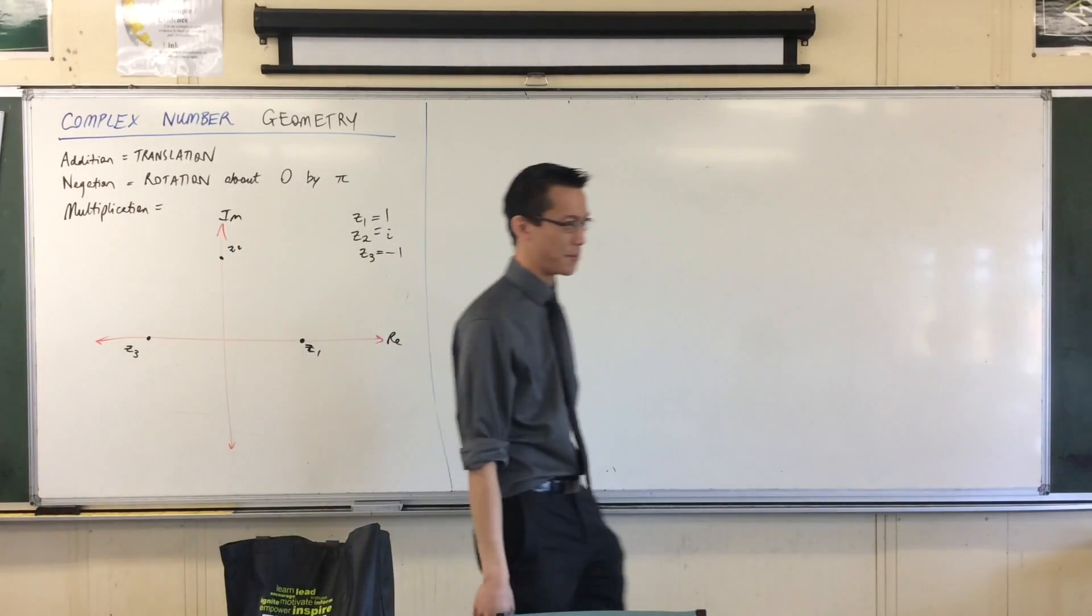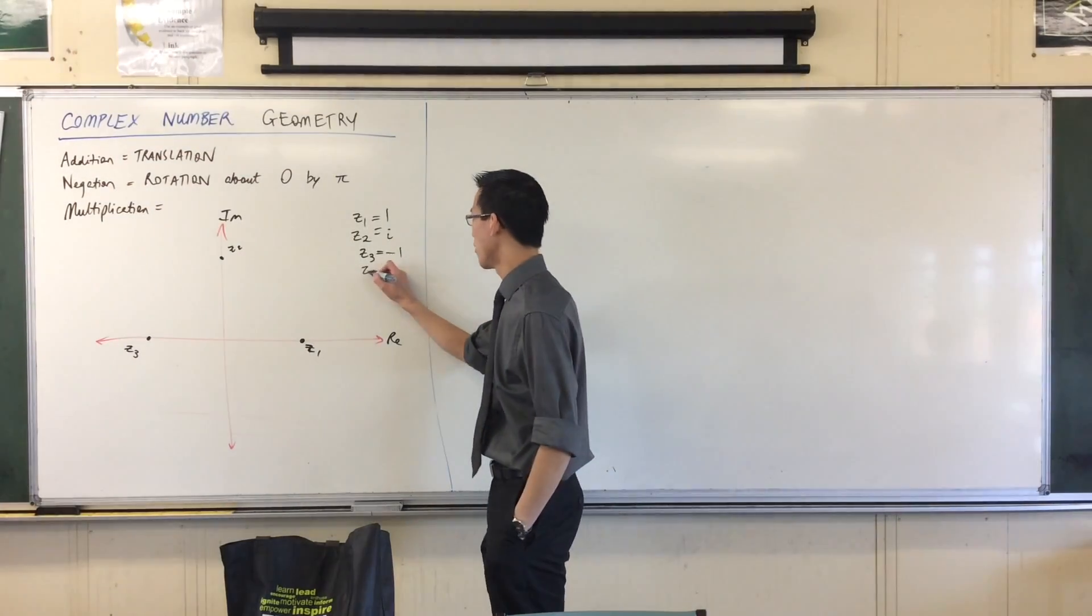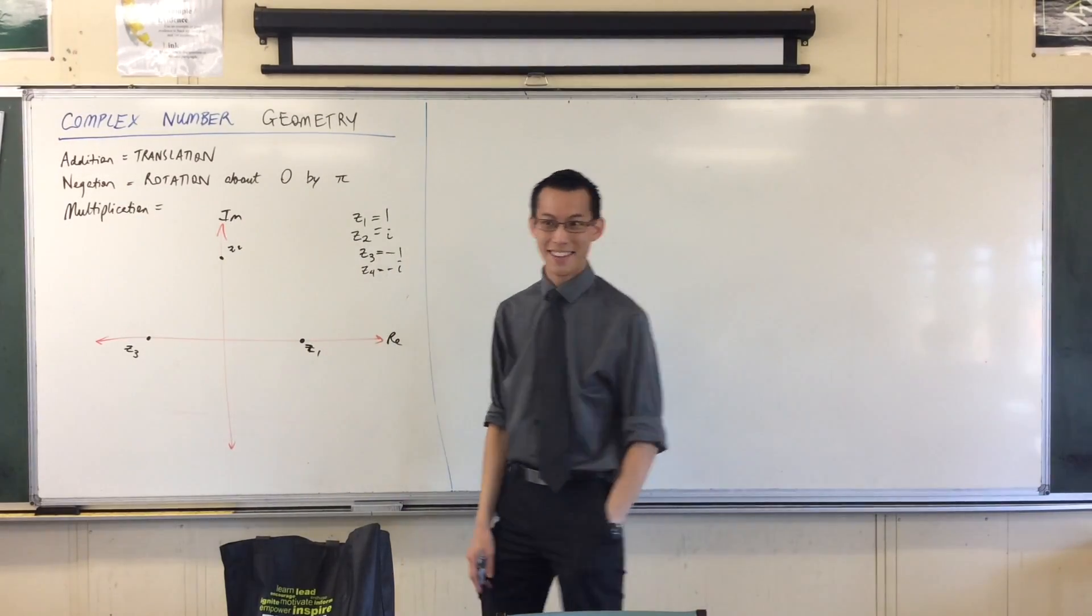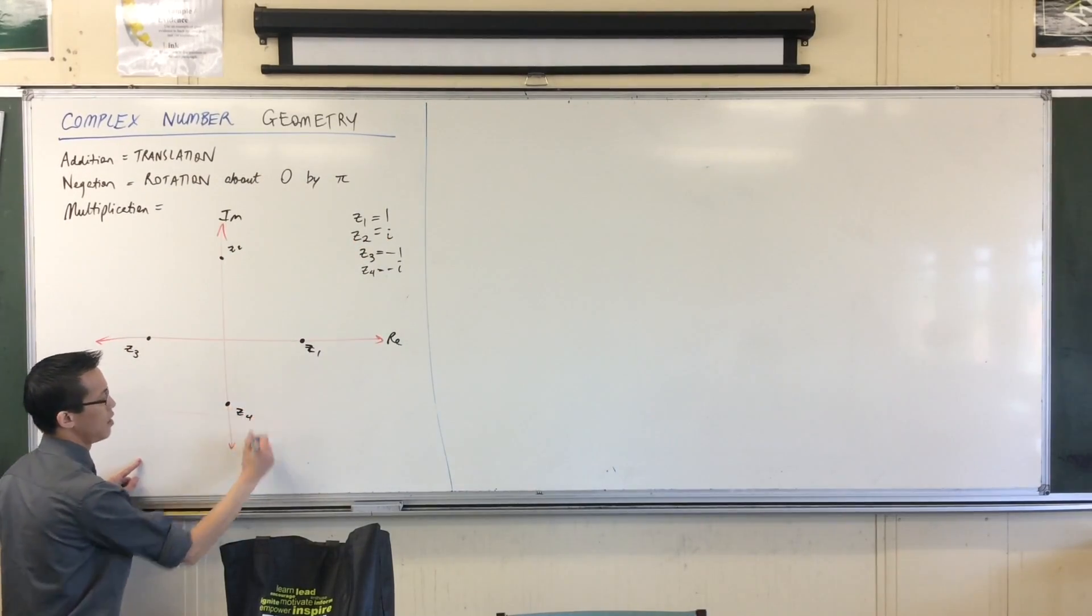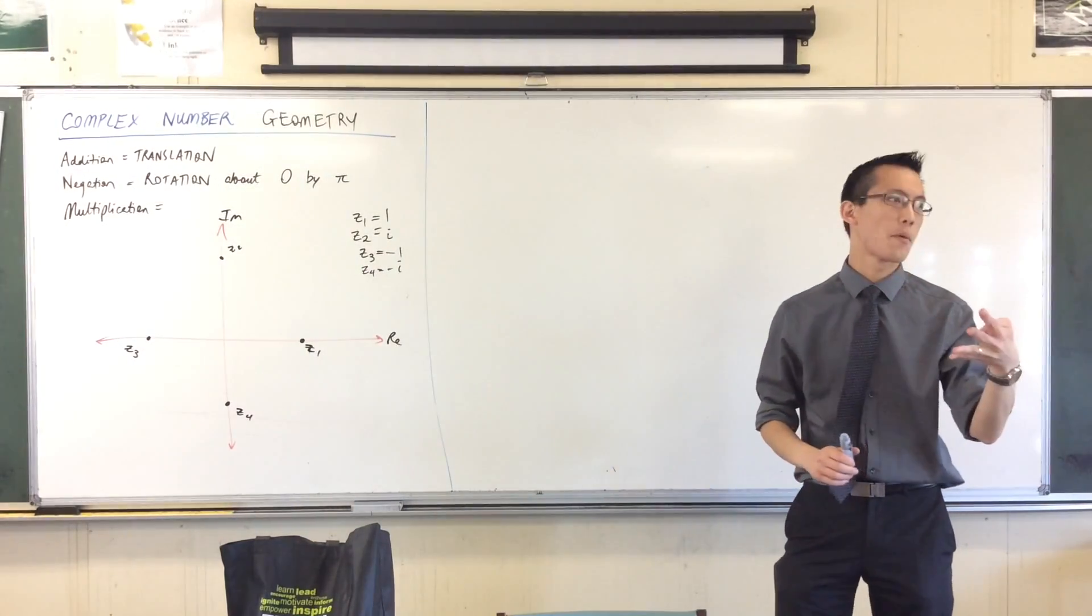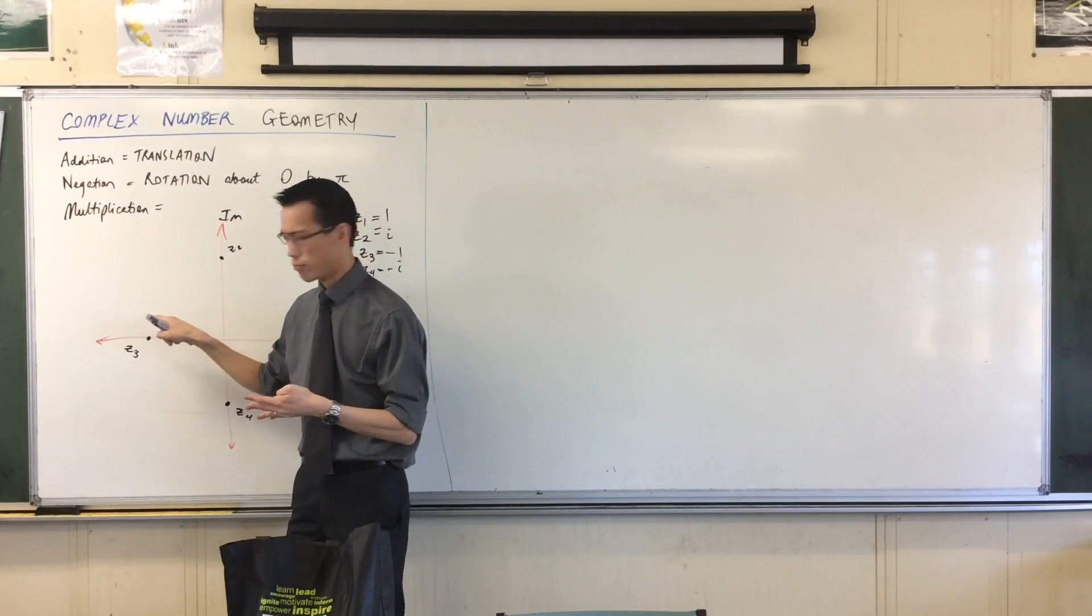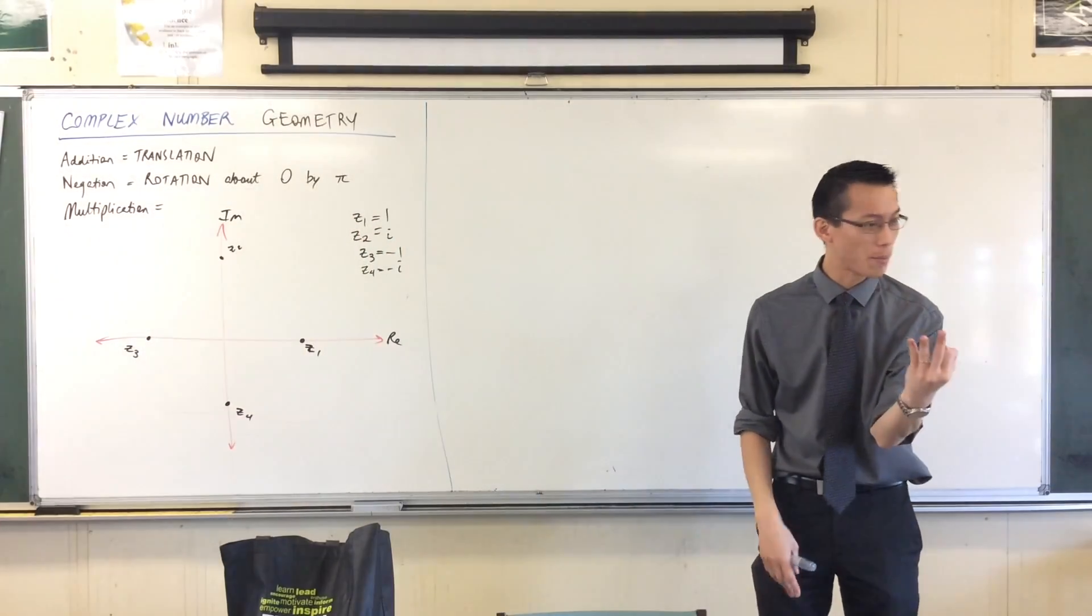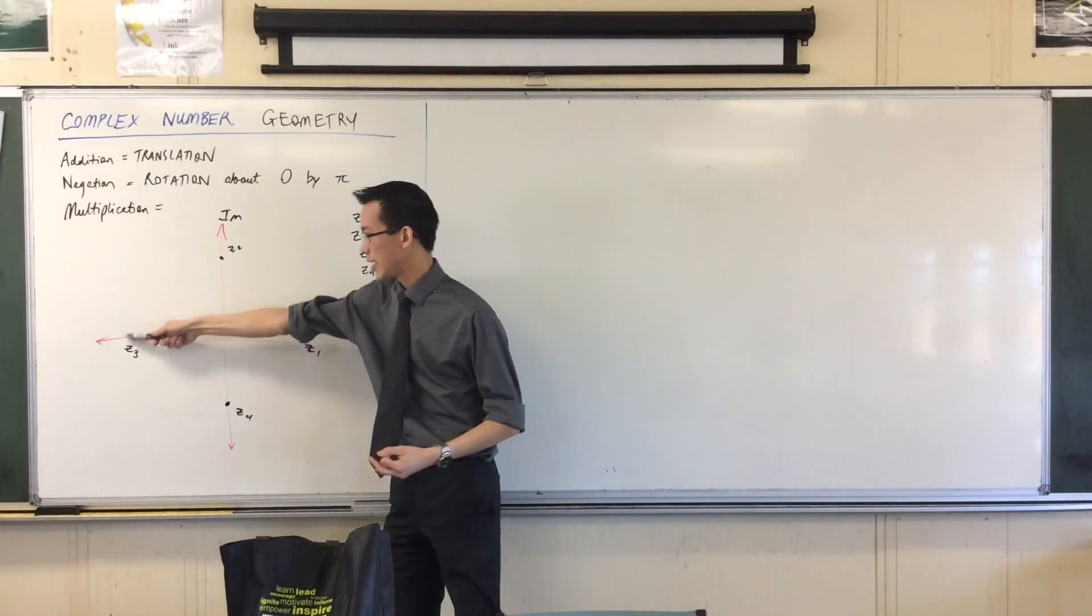We're going to do it one more time to make it bleedingly obvious. If I multiply by i one last time, Z4 will be negative 1 times i, which is negative i. And I want to ask it again. This time, let's just spot this guy. He belongs down here on the negative imaginary axis. Four times I have done the same operation. The first time I went from here to here. The second time I went from here to here. Three times I've done this operation. What is the geometric thing that gets me repeatedly from here to here to here to here?